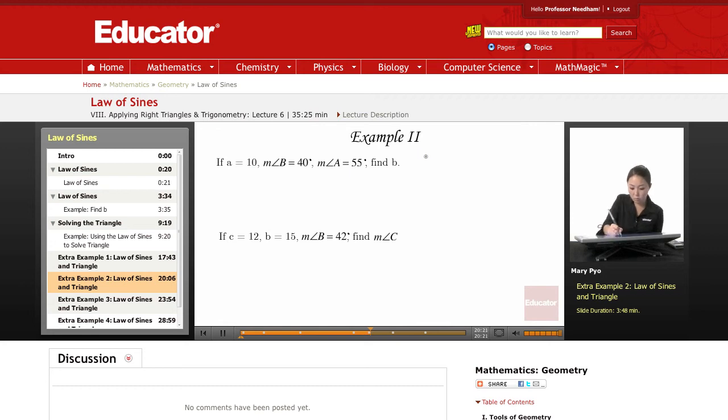So we know we're going to use sine of A over A equals sine of B over B. So sine of, what's A? Measure of angle A is 55 degrees over 10 equals sine of measure of angle B is 40 over B, which is what we're looking for. Let's continue here.